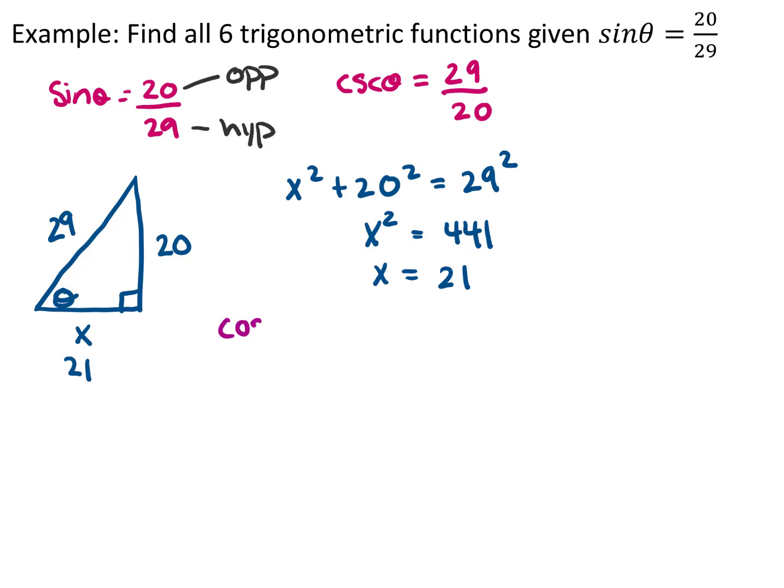We have cosine, which is adjacent over hypotenuse. So if I look at the question, the adjacent is 21, the hypotenuse is 29. Now that I know cosine, I can also do secant because it's the reciprocal.